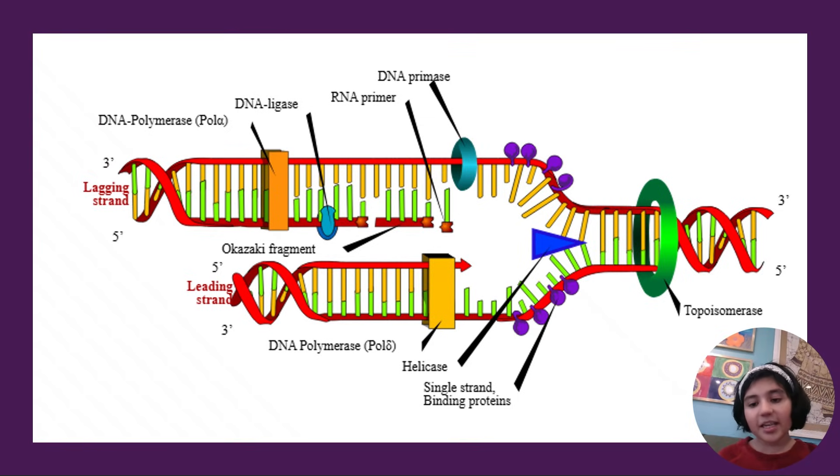My name is Adya and today I'll be explaining DNA replication. DNA replication is important as it occurs right before mitosis and meiosis. In order for there to be new cells, there has to be duplicated DNA, and mitosis and meiosis are both very important.